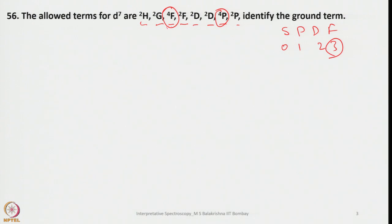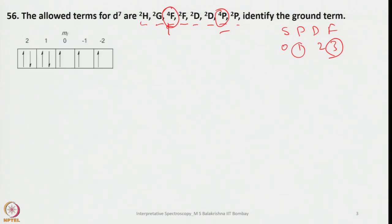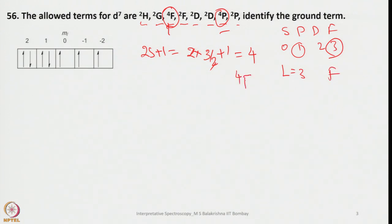For D7, L = 3 (F) has the highest L value, while P has L = 1. So 4F is the ground term. You can also solve this directly: the ground state electronic arrangement gives 2S+1 = 2×(3/2)+1 = 4, and L = 3, so the ground term is 4F. For the J value, since the shell is more than half-filled, J = L + S = 3 + 3/2 = 9/2, giving the full ground term symbol 4F9/2.